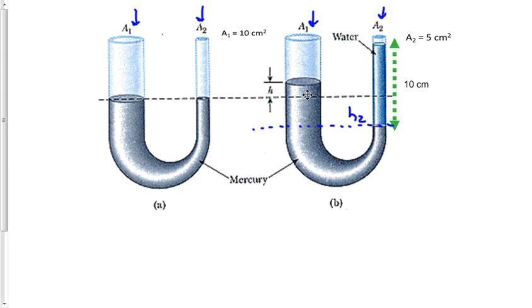And the volume of a cylinder is the cross-sectional area multiplied by height. So I can then say area 1, which is 10, and multiply that by H has to equal 5, which is the cross-sectional area 2, multiplied by H2. And then dividing both sides by 5, we find that H2 is then going to be equal to 2 times H.